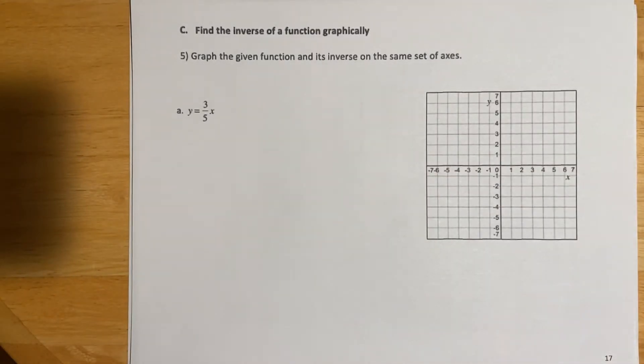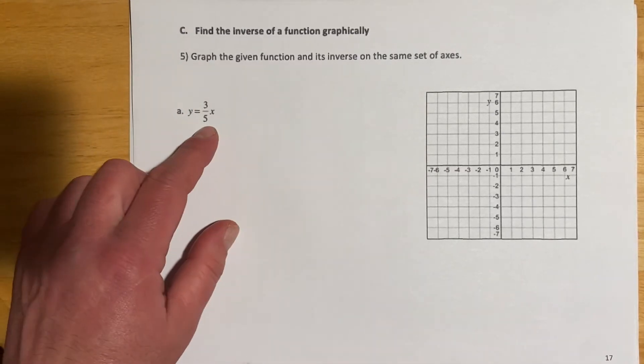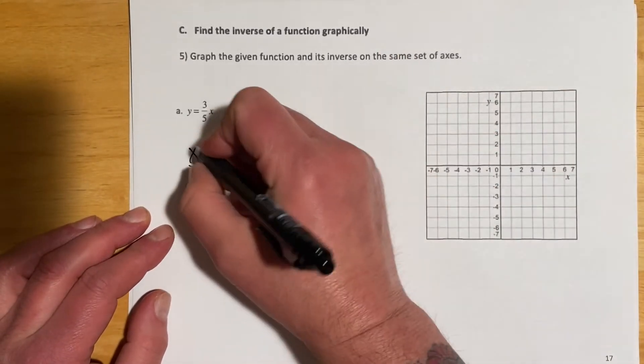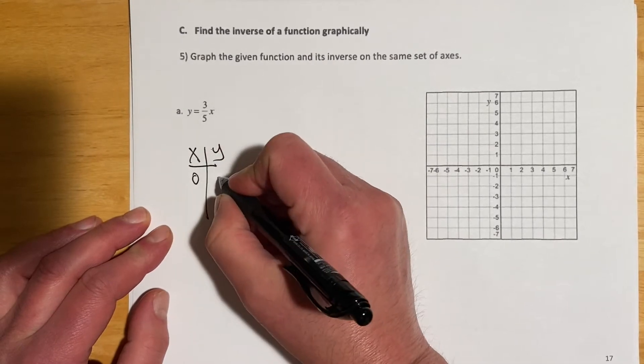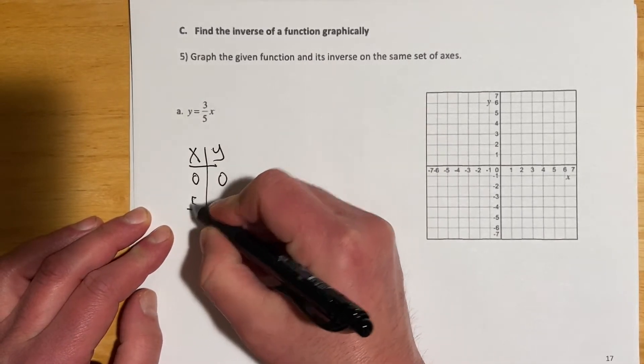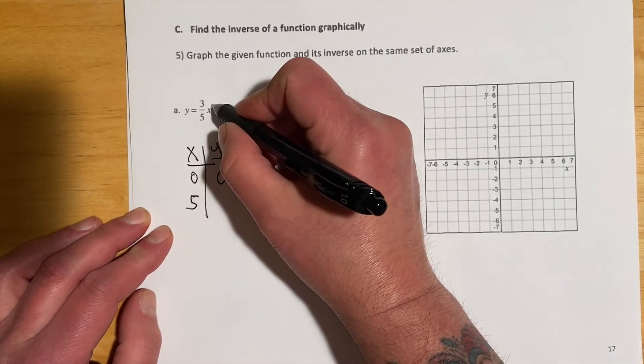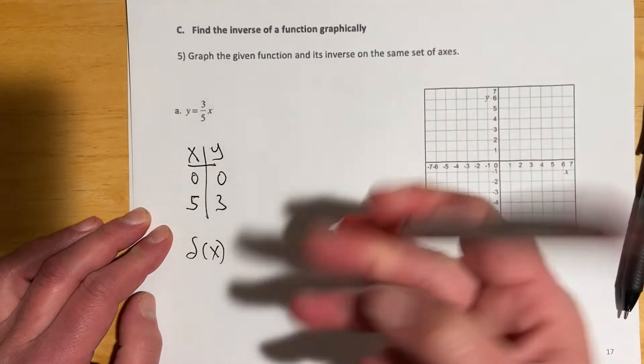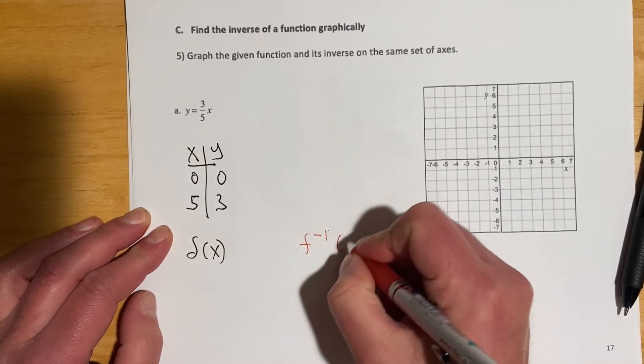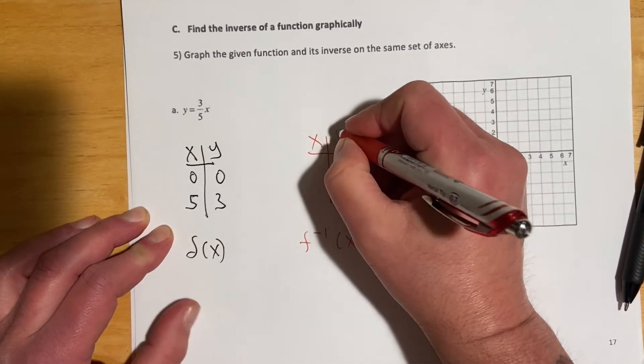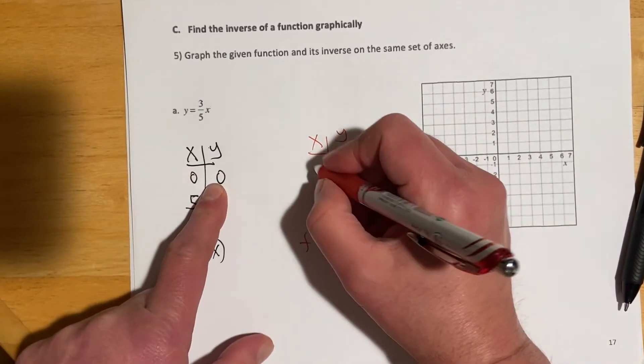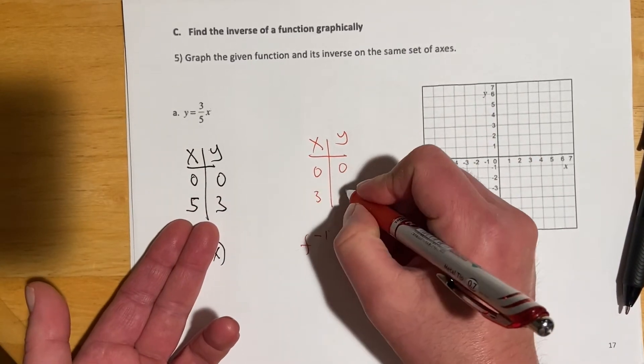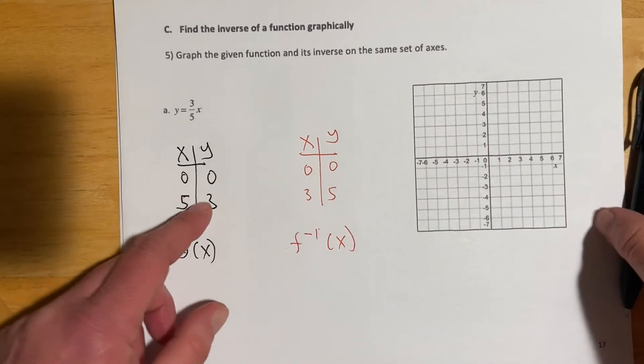Next is finding the inverse graphically. Our directions are graph the given function and its inverse on the same set of axes. Let's just make a table for this one. It'll help to explain the inverse. When x is 0, y would be 0. And then since that's 3 fifths, I'm going to plug in a 5 because it makes for easy math. I can think of those 5's canceling, and then that would leave 3. So this is f of x, my original function. For my inverse function, f inverse x, I can make a table, and now that I have this first one, I can just swap the ordered pair. 0, 0 is still 0, 0 even when I swap them. And then here, 5, 3 would be 3, 5, because the inverse has the exact opposite domain and range.